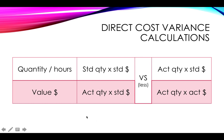Here are the formulas to use. If you are looking at quantity or hours — how much material you are using or how many hours are being worked — for the budget you take standard quantity times standard price, giving your budgeted figure. To find the quantity variance, keep the standard price constant and change to actual quantity. So you are comparing standard quantity times standard price to actual quantity times standard price. The difference tells you your quantity variance.